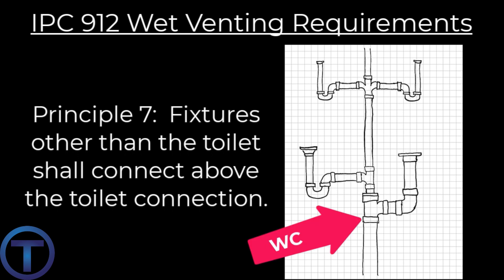Vertical wet vent principle seven: fixtures other than toilets shall be connected above the toilet connection. In other words, the toilet should be the lowest on a vertical wet vent. This is to prevent siphoning of other fixtures when the toilet flushes.